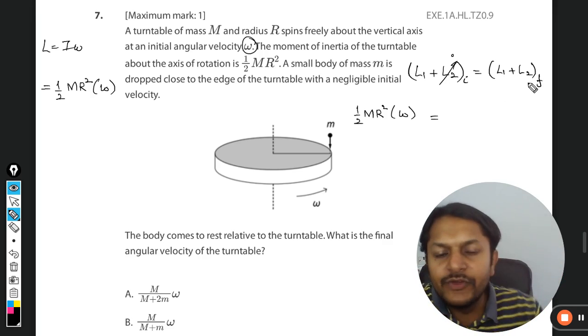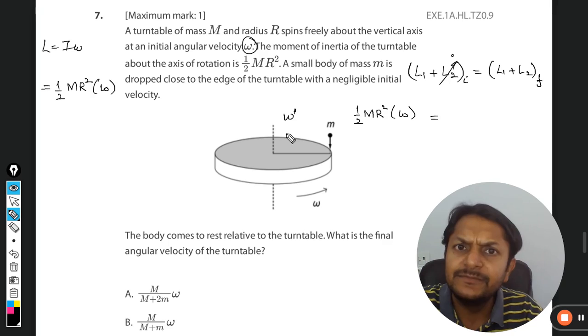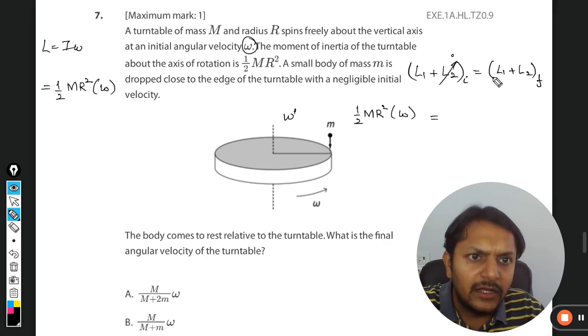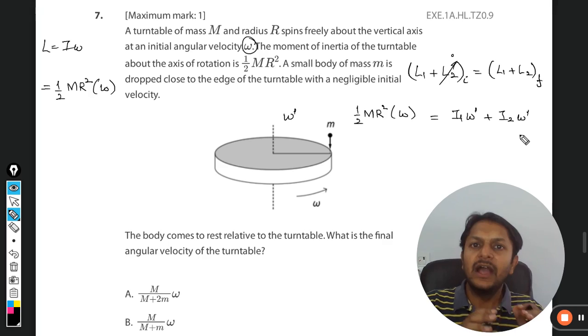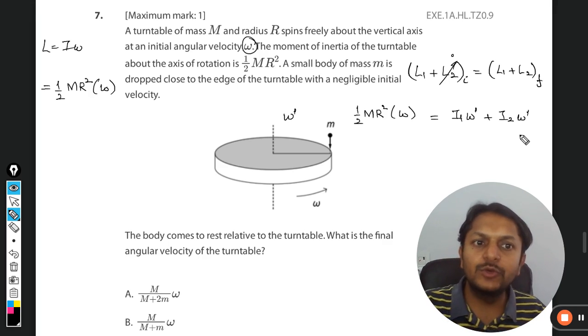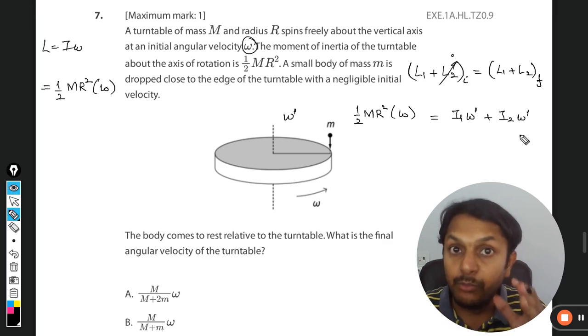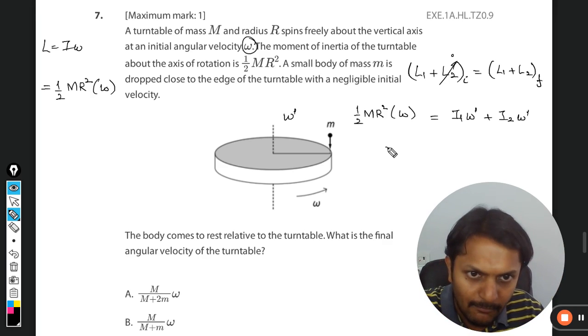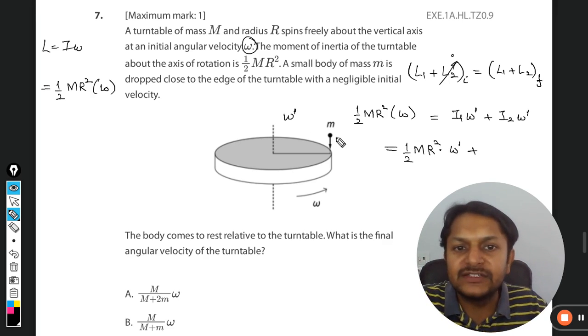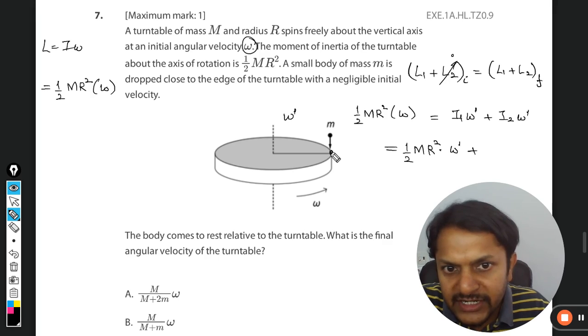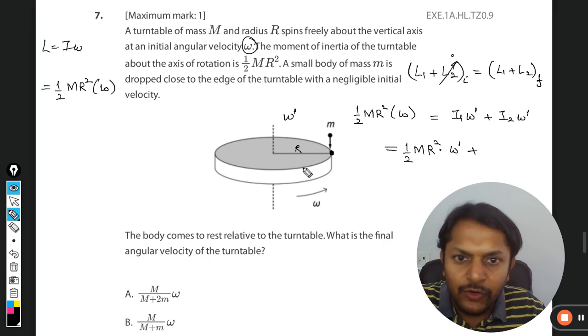So finally both of the masses are moving with, let us say, omega dash. This will be I₁ω' and this will be I₂ω'. I₁ is the moment of inertia of the body which is falling on it. Now we plug our values here: ½MR²ω' plus I₂ is the moment of inertia of this mass m. So this mass m is now sitting here, the radius is R, and it is revolving